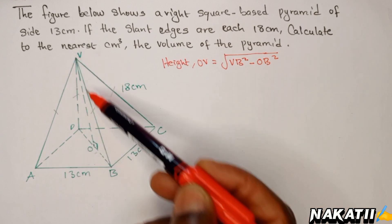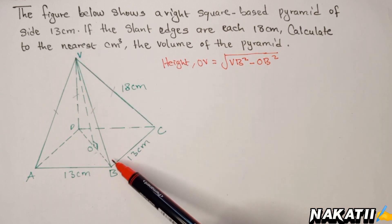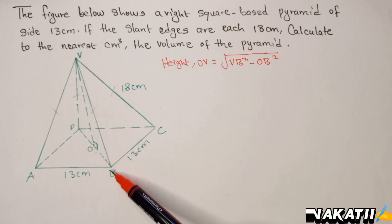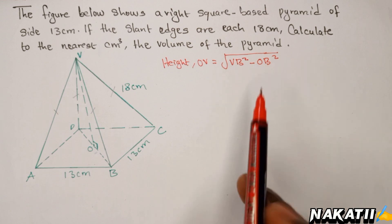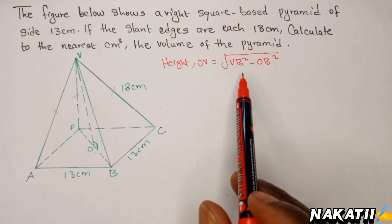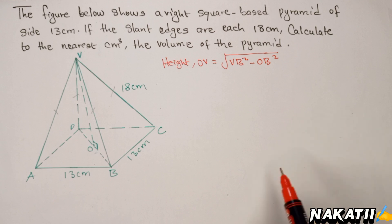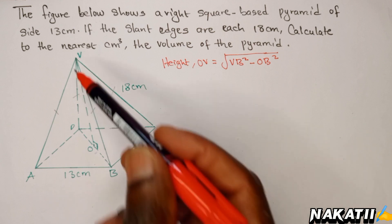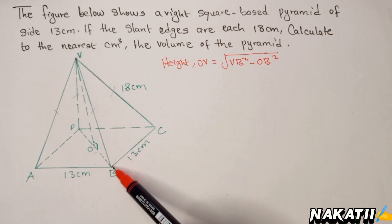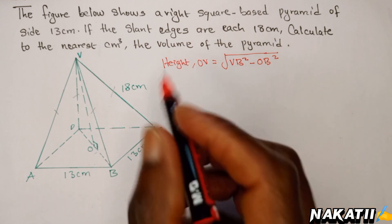We take this length squared minus this length squared, then square root, because if you extract this triangle it is a right-angle triangle. We use Pythagoras' theorem and get OV equals the square root of VB squared minus OB squared. But we don't know what OB is. We know VB is 18, but we don't know OB.